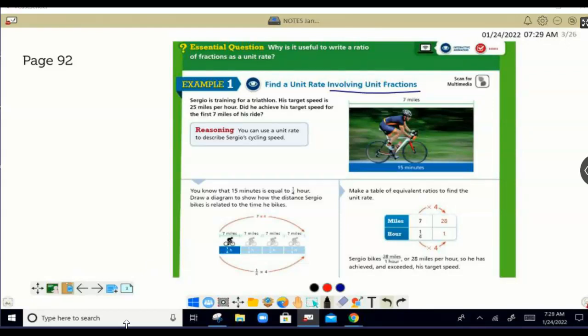Sergio is training for a triathlon. His target speed is 25 miles per hour, and we're looking at the information that we see here in our graphic. He does seven miles for 15 minutes. That is going to be our ratio that we know, and then we're going to change it into a ratio that we don't know, which is our unit rate.